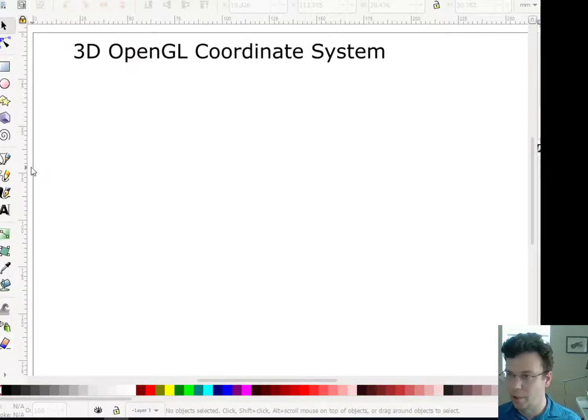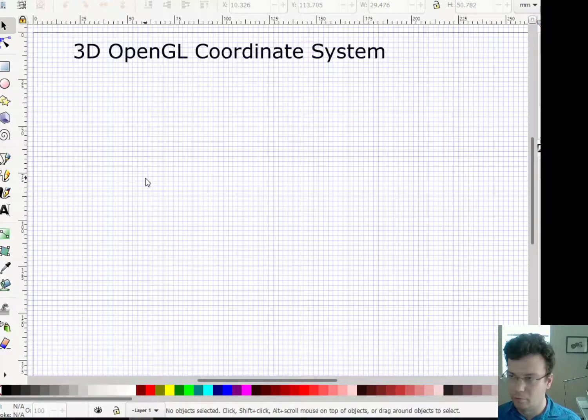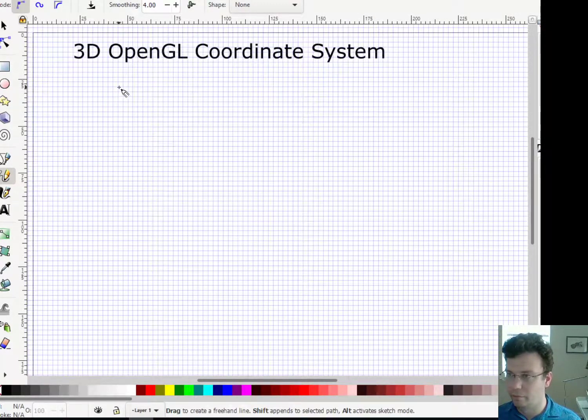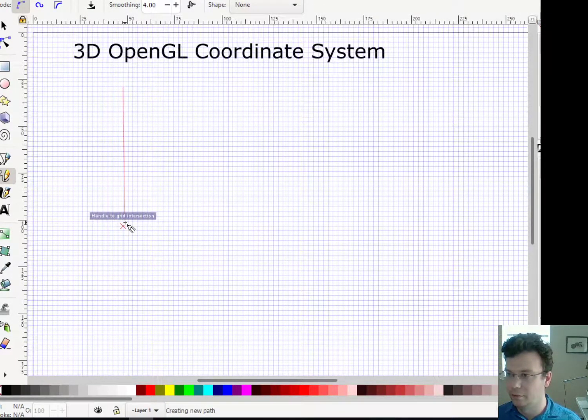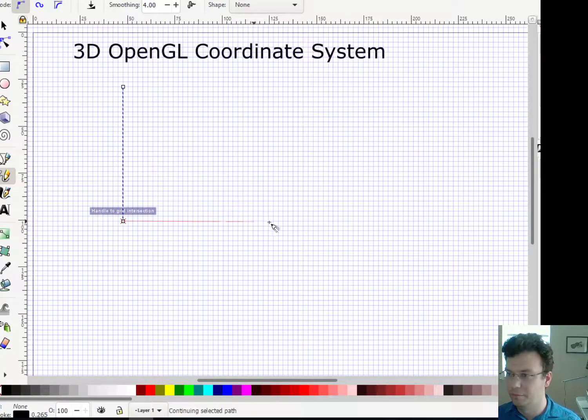All right, one more quick thing I need to talk about, about the basics of Euclidean vectors. So all the examples we've been given so far are 2D, but in this class we're really focused on 3D graphics. So we have to add a dimension. We have to add a coordinate.